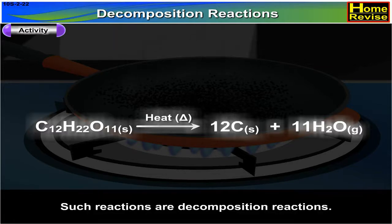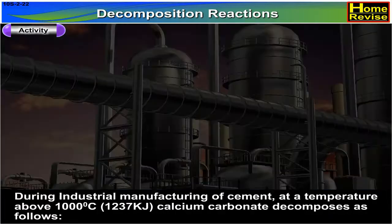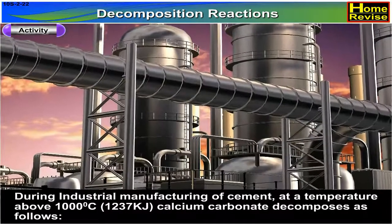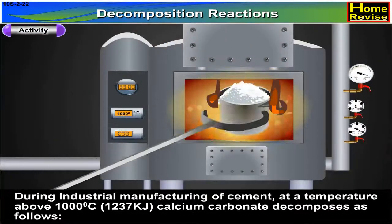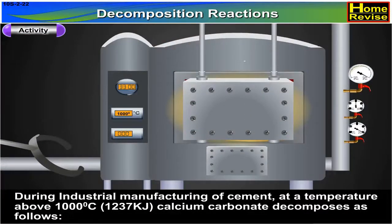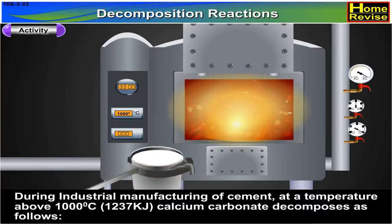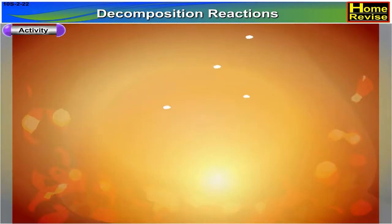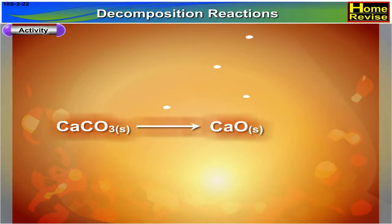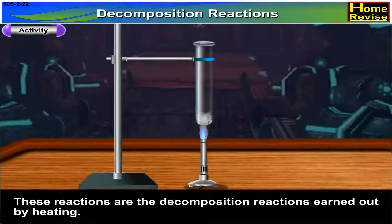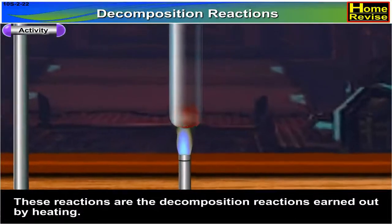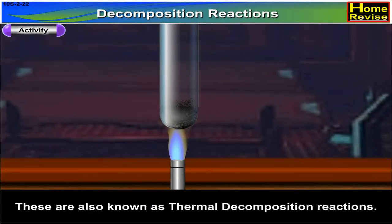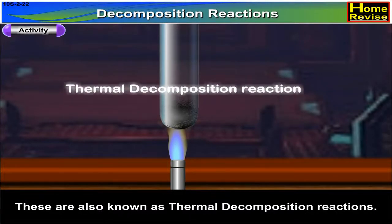Such reactions are decomposition reactions. During industrial manufacturing of cement at a temperature above 1000 degrees Celsius, calcium carbonate decomposes as follows: CaCO3 in solid form gives CaO in solid form plus CO2 in gaseous form. These reactions are decomposition reactions carried out by heating, also known as thermal decomposition reactions.